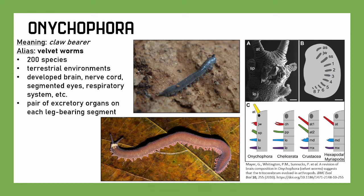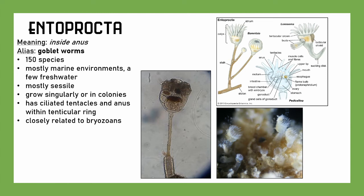We have Entoprocta, which — I can't sugarcoat this — means 'inside anus.' A much nicer name is goblet worms, because they kind of look like a goblet. About 150 species, mostly marine with a few freshwater. They're mostly sessile — they latch somewhere and just filter feed. They can grow singly or in colonies, and they have ciliated tentacles. The name comes from the fact that their anus is within the tentacular ring. These are closely related to Bryozoa, which is why some groupings combine Bryozoa and Entoprocta as the same phylum, but we've split them out here.